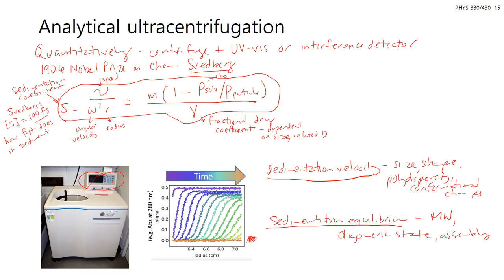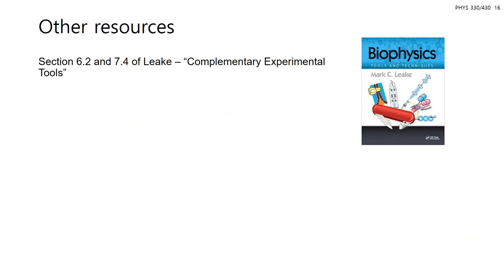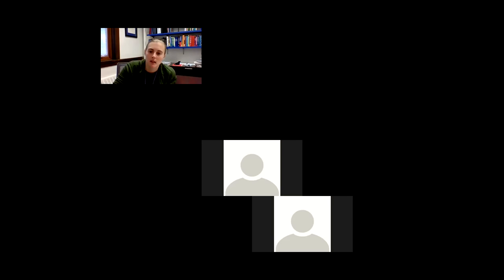So centrifugation can be used both for purification and quantitatively as an instrument. For the textbook, protein expression is covered in chapter seven, and separations are covered under the forces section. Though I understand that separations take advantage of forces, they're quite different as a method compared to force instruments and single-molecule measurements we've discussed. Any questions?